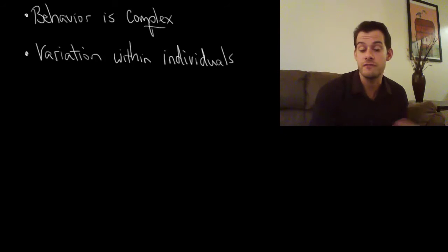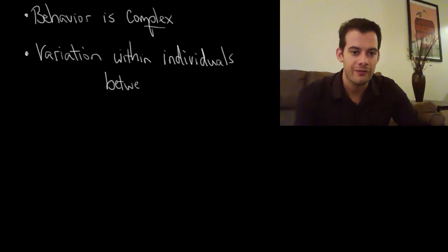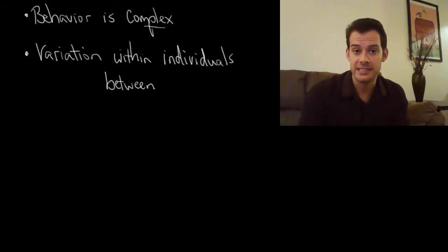The same person can give us two very different measurements from one time to another. We also have a problem of variation between individuals. So the way that you respond to a particular stimulus might be completely different from the way that I respond to the exact same stimulus. And this can make it really difficult for us to generalize our results from one person to another.